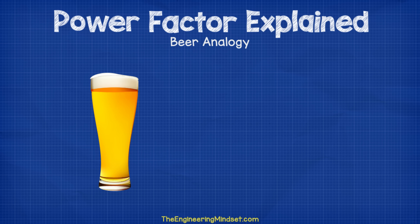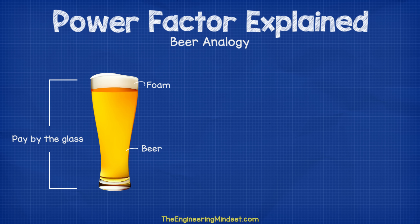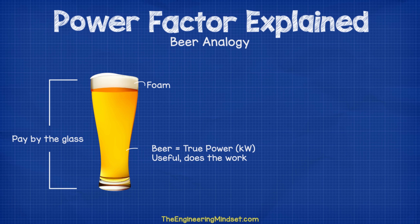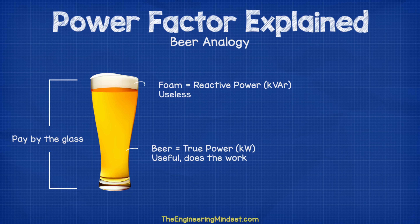My favorite analogy to explain this is the beer analogy. We pay for beer by the glass, but inside the glass there is both beer and foam. The more beer we have, the less foam there will be, so we get very good value for money. If there is a lot of foam, then there's not a lot of beer, and so we're not getting very good value for money. The beer represents our true power, or our KW, our kilowatts — this is the useful stuff we want and need; this is what does the work. The foam represents our reactive power, or our KVAR, kilovolt amps reactives. This is the useless stuff — there will always be some, we have to pay for it, we can't use it, so we don't really want much of it. It does actually have a use and a purpose, but we'll see why later in the video.